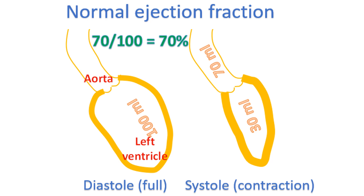In heart failure with reduced ejection fraction, the ejection fraction is below 40%. Some persons have a stiff left ventricle due to disease, which cannot relax and fill well. They have a normal ejection fraction, typically above 50%. This is heart failure with preserved ejection fraction in simple terms.